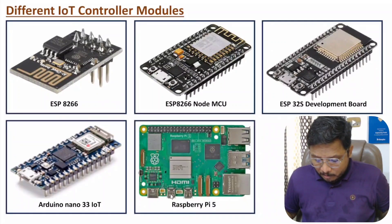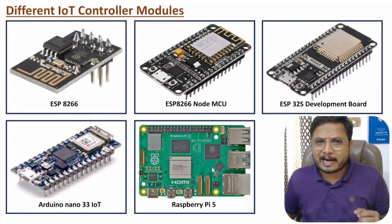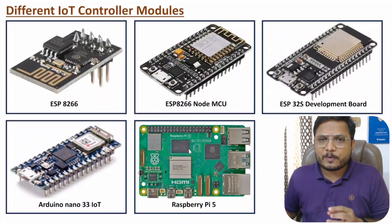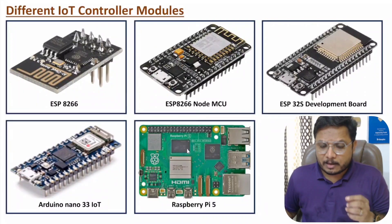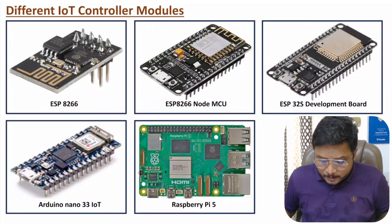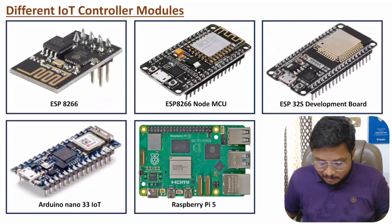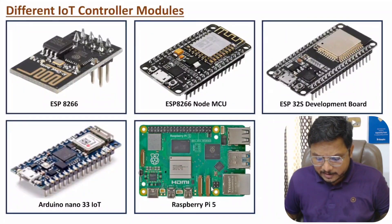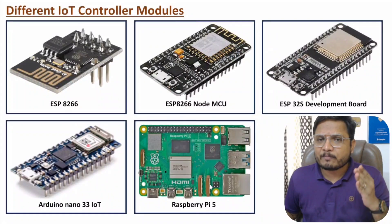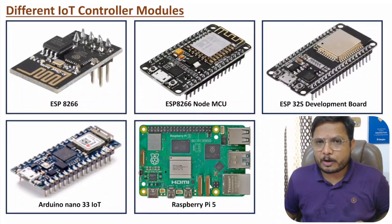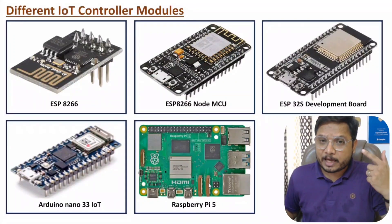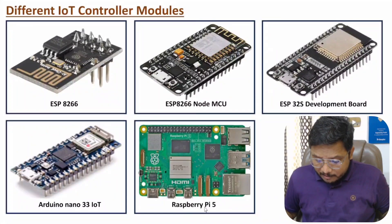After that we have the Raspberry Pi 5. This module is essentially a computer running a Linux operating system. It has so many IO interfaces — USB connection, Ethernet connection, Wi-Fi connection, Type-C connection, and camera interface. So many functionalities are available with Raspberry Pi 5, making it preferable for high-end applications.